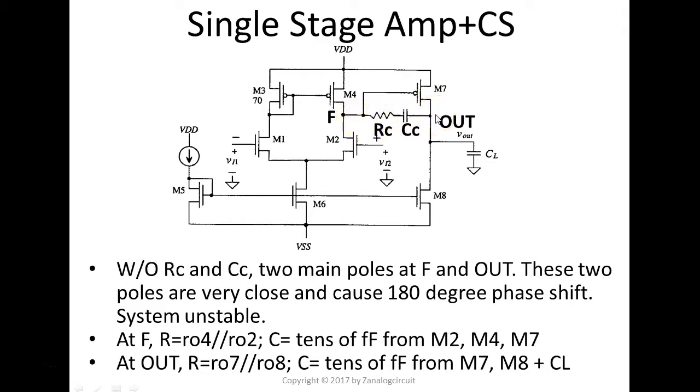Now, let's go to the output. That's about the same case here. So at the output, when you look at impedance, that's RO of this M7 transistor in parallel with the RO of M8 transistors. And when you look at the capacitance, it's also about in the range of tens of femtofarads because of the drain capacitor from M7, M8, plus a little bit loading from the downstream device. So as you can see, these two poles are pretty close. One pole causes 90 degree phase shift, two poles 180 degrees. It's already too much.